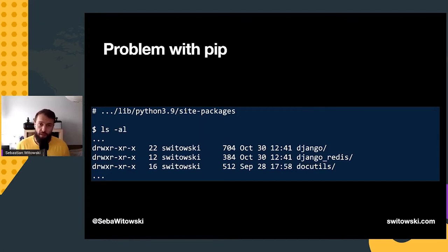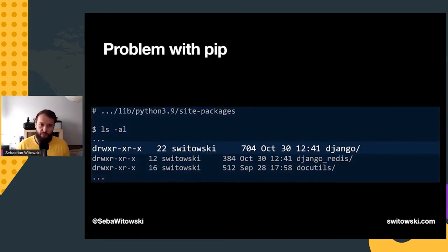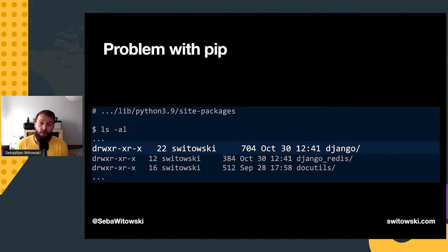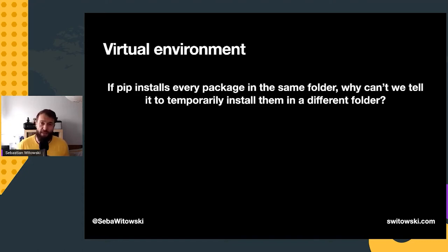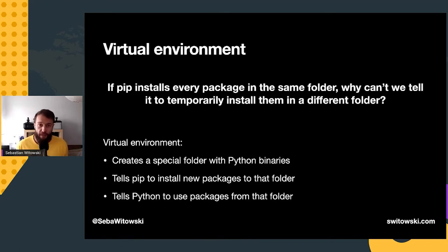We just ran into a problem with dependency management. This happens because pip installs Python packages inside the site-packages folder and puts each package in a separate folder named after that package. So Django 3 is placed inside `site-packages/django`, but Django 2 would also go into `site-packages/django` — pip has to remove the existing version first. If you only work with one Python project, you're probably not affected, but sooner or later you will need different versions of the same package and run into issues. The root problem is that pip installs all packages in the same folder.